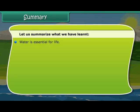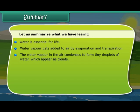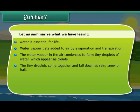Water is essential for life. Water vapor gets added to air by evaporation and transpiration. The water vapor in the air condenses to form tiny droplets of water which appear as clouds. The tiny droplets come together and fall down as rain, snow, or hail.